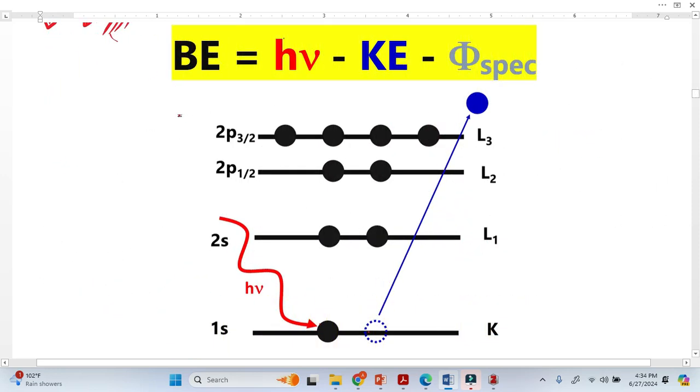Now let us discuss the working principle behind XPS. In XPS, we simply shine X-rays on the sample surface. Because of that X-ray, the core electron ejects and this we call photoelectrons.